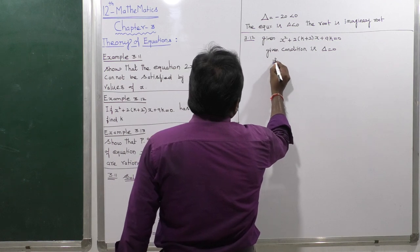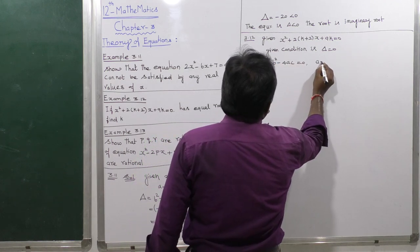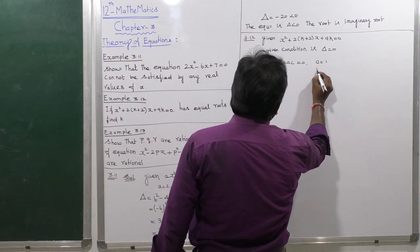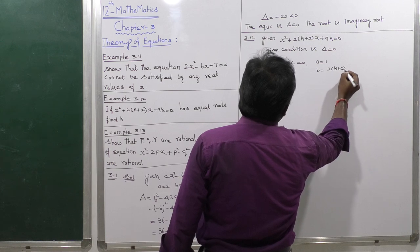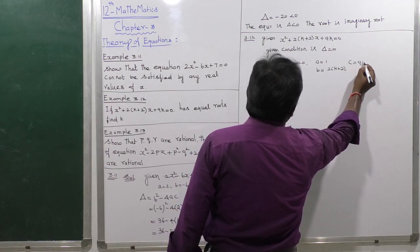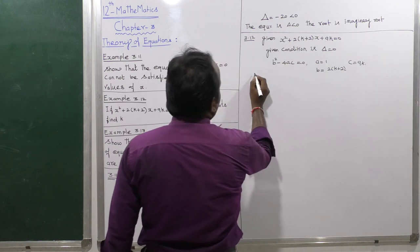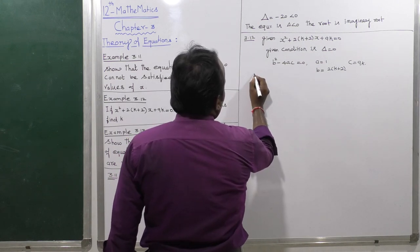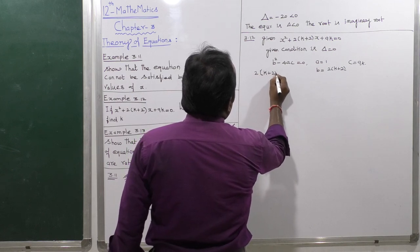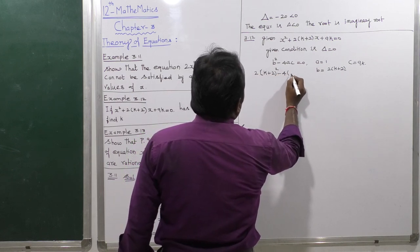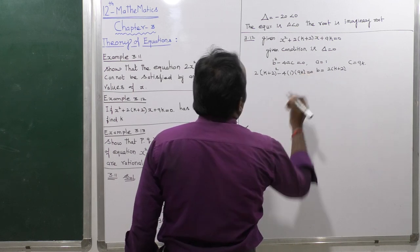Delta equals b squared minus 4ac equals 0. Here a equals 1, b equals 2 into (k plus 2), and c equals 9k. Substituting: b squared equals 2 into (k plus 2) the whole square, minus 4 into 1 into 9k equals 0.